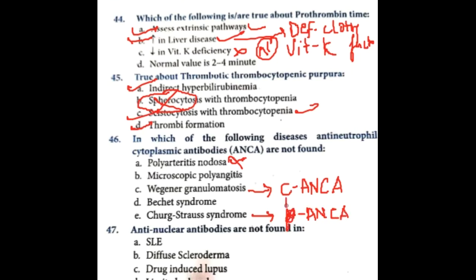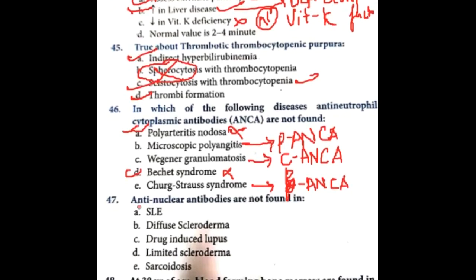P-ANCA is seen in Churg-Strauss disease and also in microscopic polyangiitis. ANCA is not seen in polyarteritis nodosa and Behçet's disease. Anti-neutrophilic cytoplasmic antibodies are seen in microscopic polyangiitis, Wegener's granulomatosis, and Churg-Strauss disease.